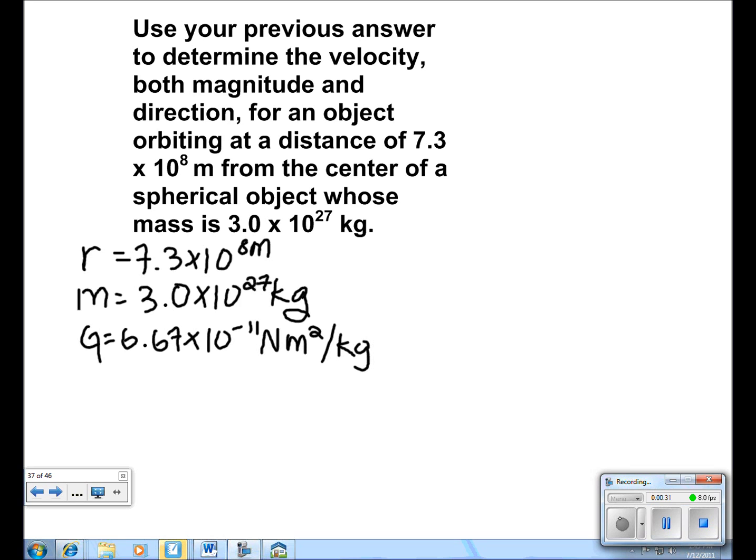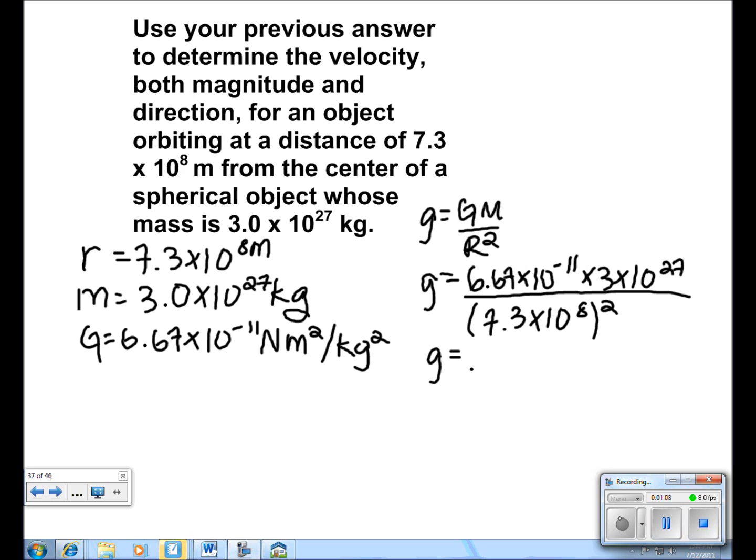We use the formula g is equal to GM over r squared to find the surface gravity. We plug in the numbers and we get 6.67 times 10 to the negative 11 times 3 times 10 to the 27 all over 7.3 times 10 to the 8 squared. We get an answer of 0.3755 meters per second squared.